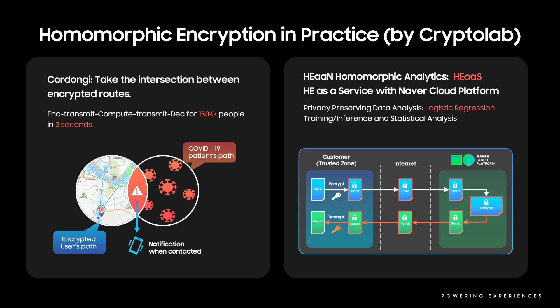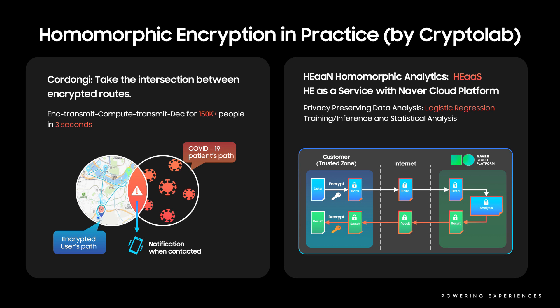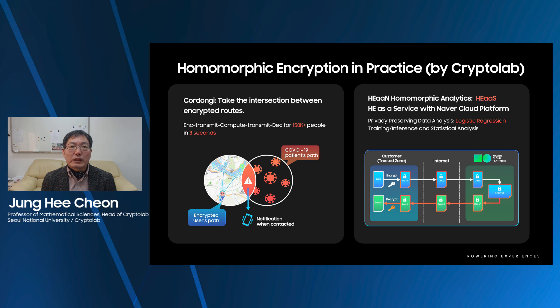FHE is being realized worldwide. One application of FHE is a privacy-preserving COVID-19 tracing app called Kodongi. Kodongi takes the intersection between encrypted routes in a few seconds for encrypt, transmit, compute, transmit back, and decrypt. The other application is FHE as a service, where encrypted data is stored on cloud and processed without decryption. This service is in preparation on several cloud platforms, including neighbor cloud platform.